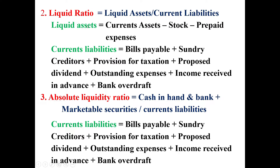With these two values, we calculate the liquid ratio. Third ratio: Absolute Liquid Ratio. The formula is: Cash in Hand and Cash at Bank plus Marketable Securities, divided by Current Liabilities. Current liabilities are: bills payable, sundry creditors, provision for tax, proposed dividend, outstanding expenses, income received in advance, and bank overdraft.